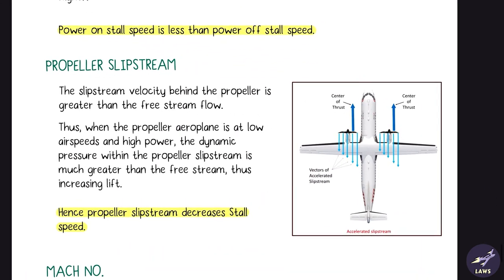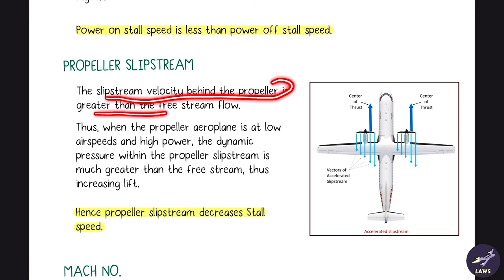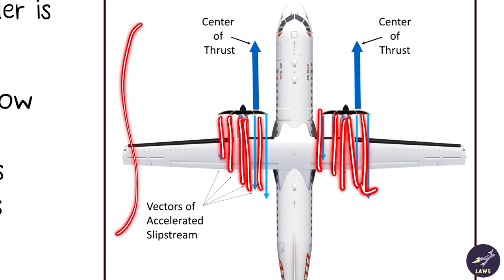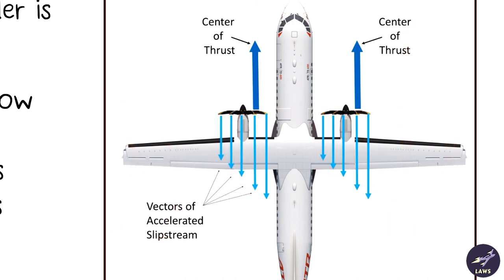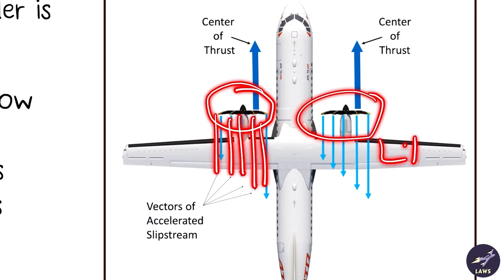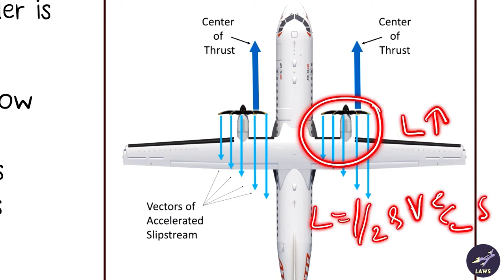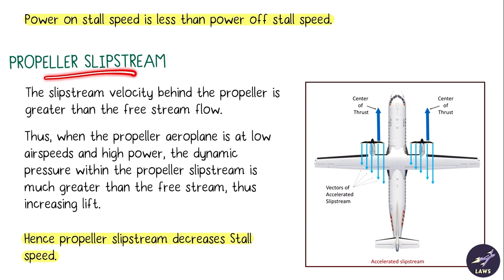Propeller slipstream: the slipstream velocity behind the propeller is greater than the free-stream velocity. This increased speed over the wings due to the slipstream increases aircraft lift. Since slipstream works to increase lift (via the half-rho-V-squared-CL formula), the actual aircraft velocity can be reduced while maintaining lift. Hence, propeller slipstream reduces or decreases the stall speed.